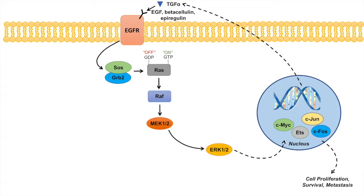To quickly review the RAS-RAF-MEK-ERK pathway: it all begins with the activation of EGFR, the epidermal growth factor receptor, which can be activated by ligands such as TGF-alpha, EGF, beta-cellulin, or epiregulin. When the EGFR receptor is activated, it leads to RAS being loaded with GTP. In an inactive state, RAS is GDP-loaded, but when EGFR is activated, it leads to GTP loading of RAS, which is the activating signal.